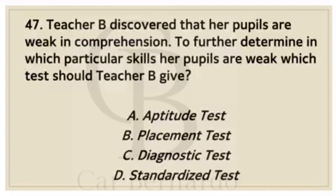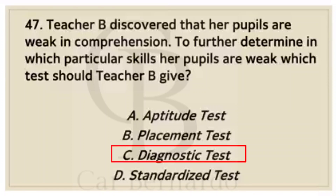Number forty-seven: Teacher B discovered that her pupils are weak in comprehension. To further determine in which particular skills her pupils are weak, which test should Teacher B give? Letter A: Aptitude test. Letter B: Placement test. Letter C: Diagnostic test. Letter D: Standardized test. Answer: Letter C, Diagnostic test.